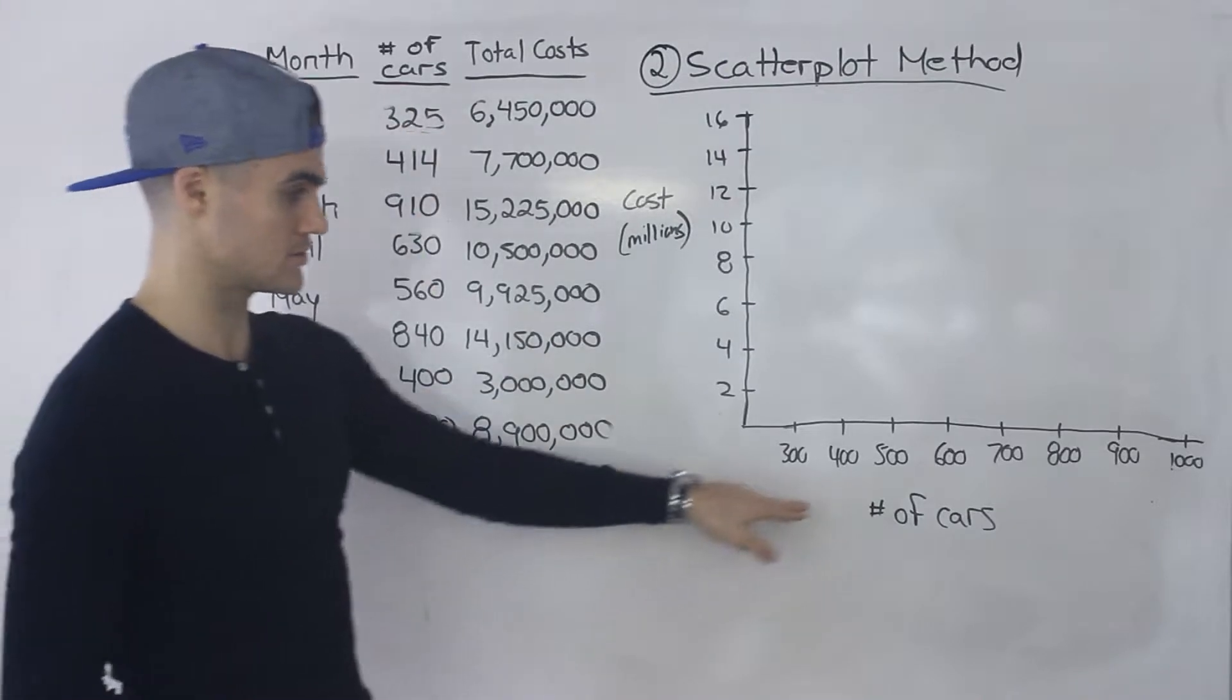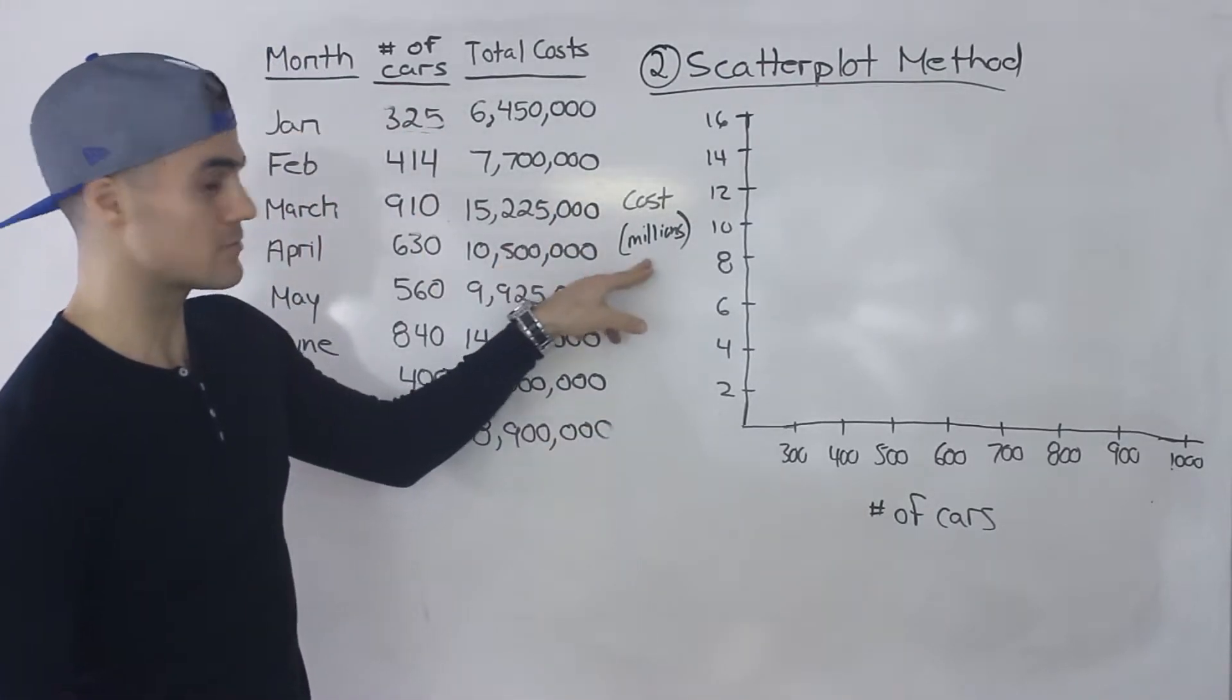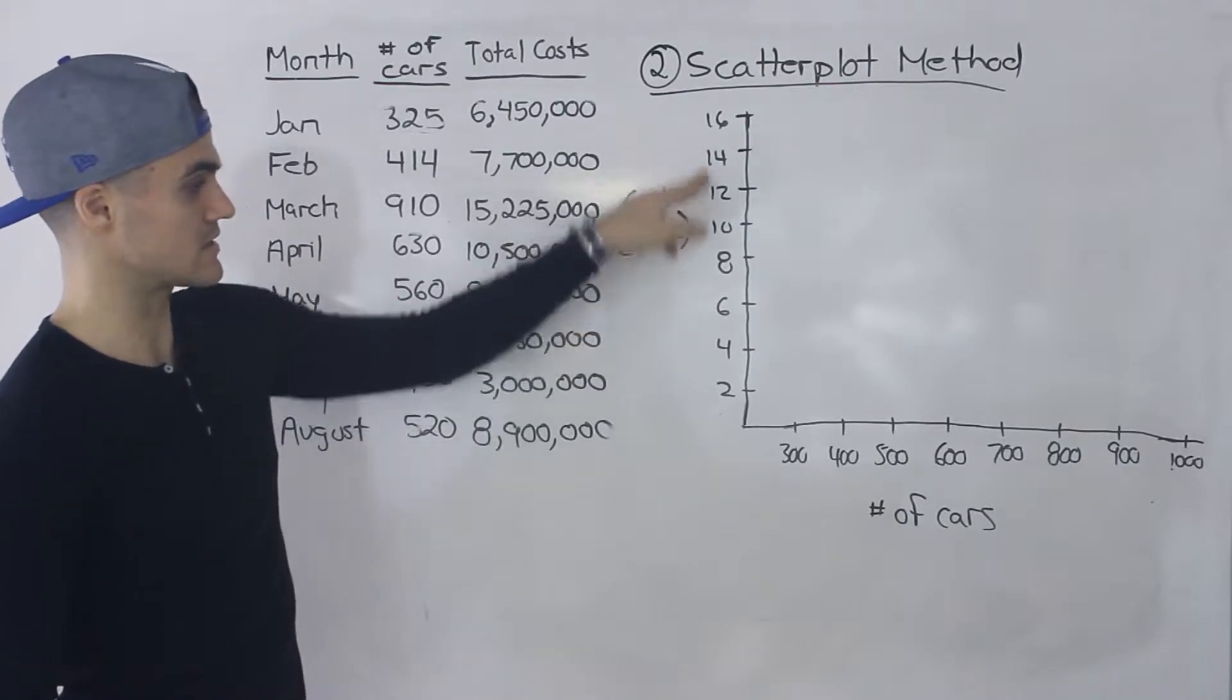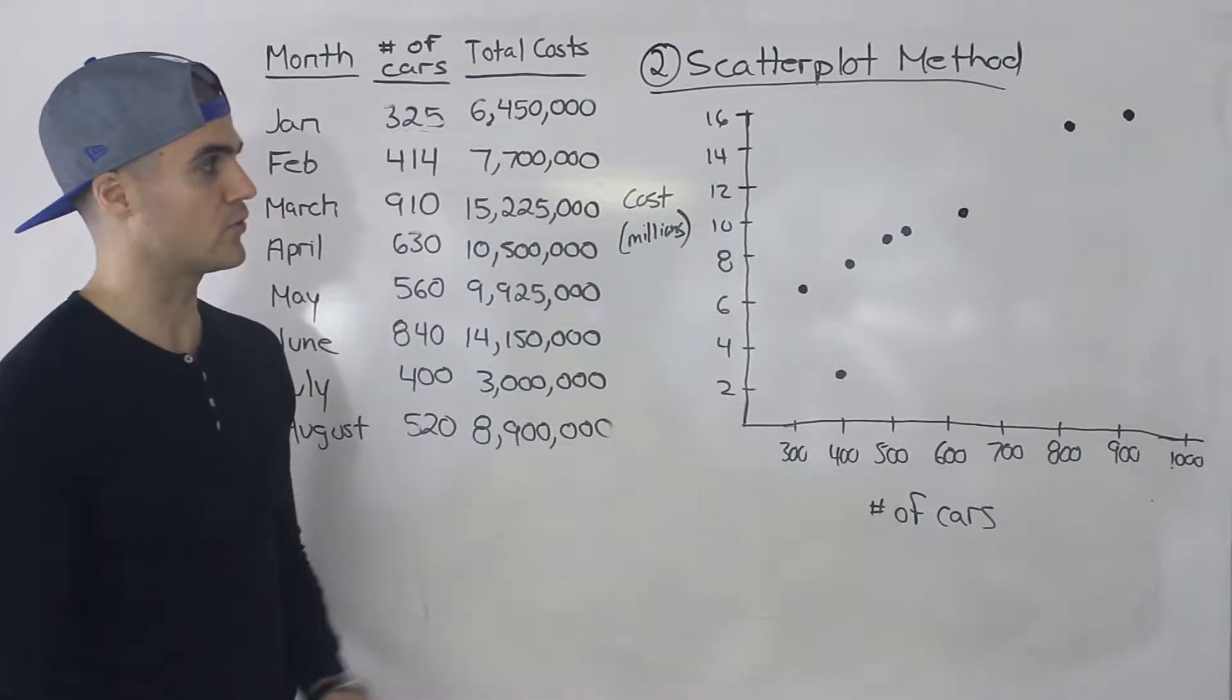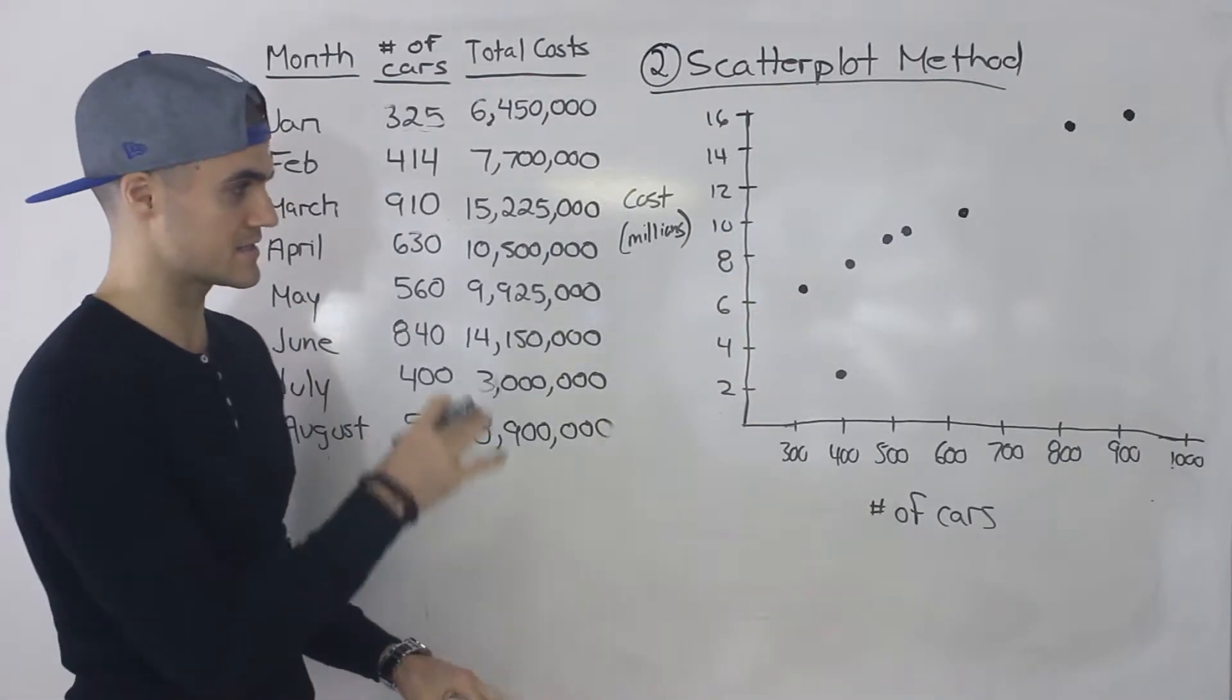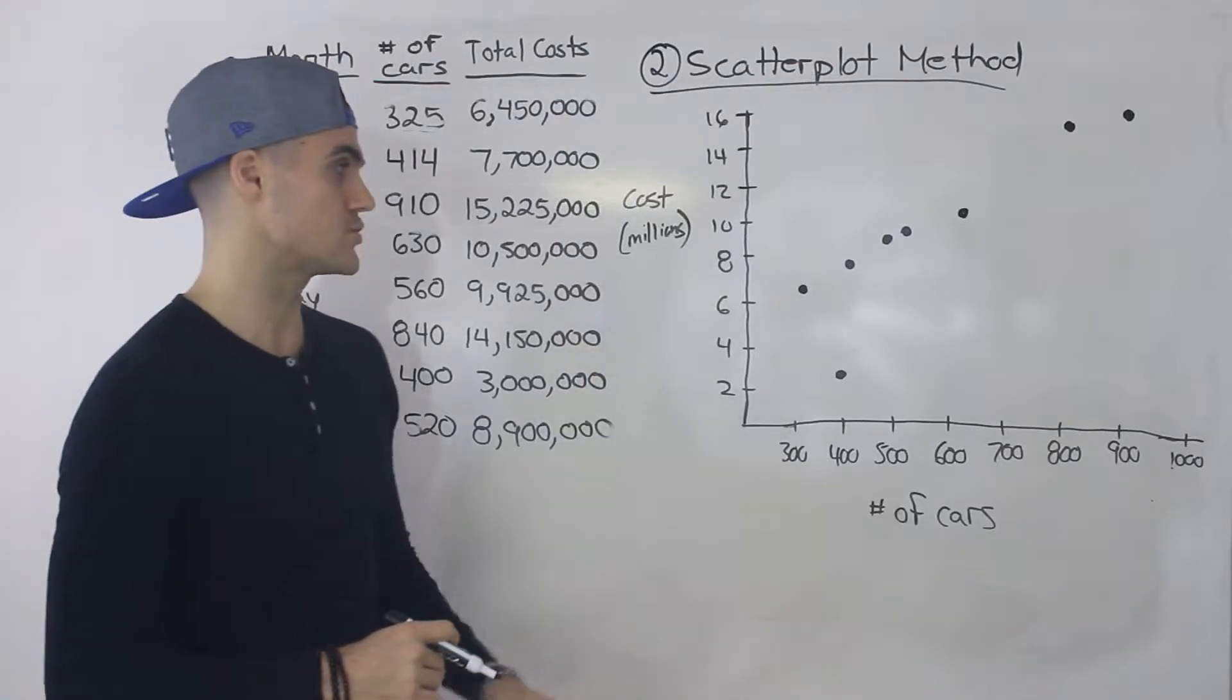So the output, the number of cars, it's always on the x-axis and then the total cost is always going to be the y-axis and this is all in millions. And so when you take these points and plot them, this is basically how the graph is going to look. Maybe not as to scale because I made it on a whiteboard but this is the general shape that you should get here.